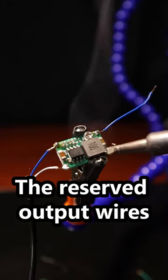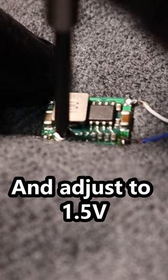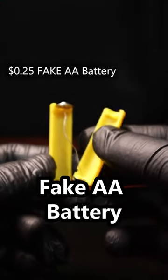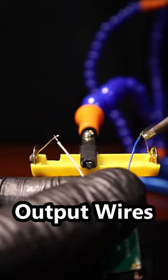Now solder the reserved output wires. Connect that to a multimeter and adjust to 1.5 volts. Now let's take this fake AA battery, cut out the middle part and solder the output wires.